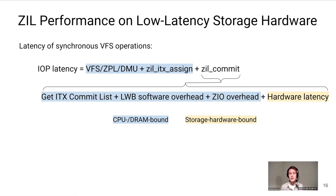ZIL commit does the work of figuring out which ITXs need to be written out to disk — building the ZIL commit list — then takes those ITXs, converts them into log records, packs them into LWBs, and uses the ZIO pipeline to write those LWBs to storage hardware. All of these are software steps that add overhead to the actual hardware latency for each LWB written.